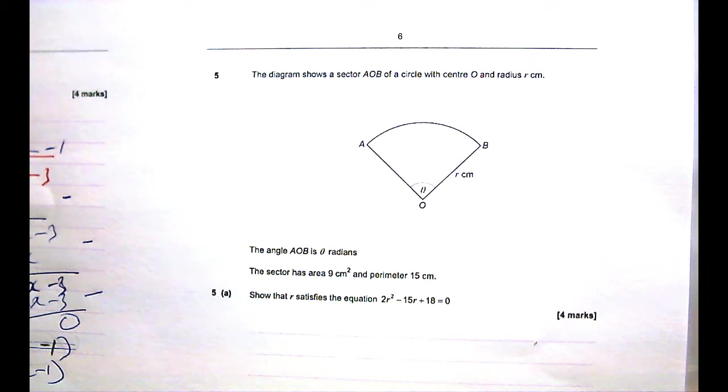Alright, question 5 says the diagram shows a sector AOB of a circle centered at O and radius R cm.